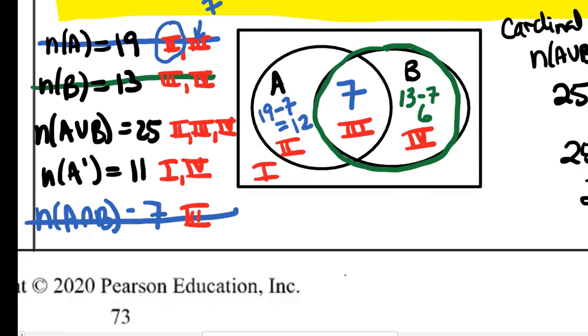We actually already used A union B when we did the cardinal number formula, so I'm going to cross that one off as well. We've used that as well. And now the last thing should give us the information that we need for region one.